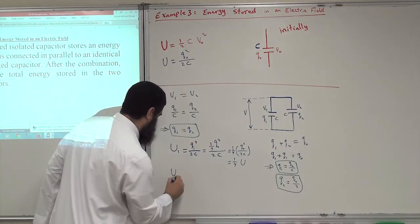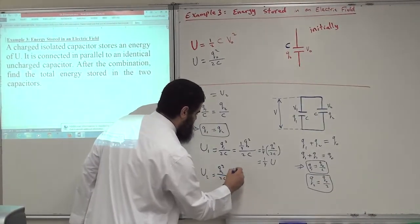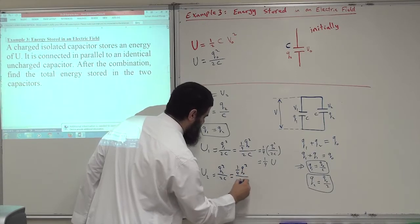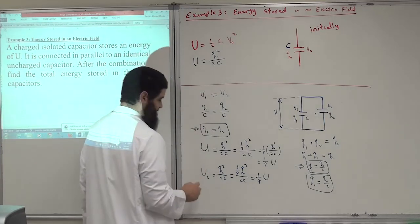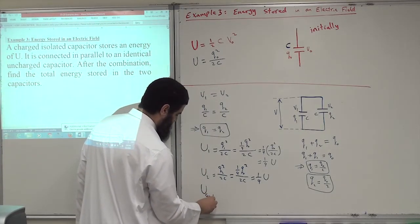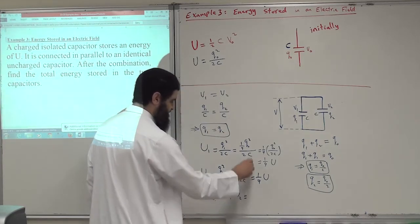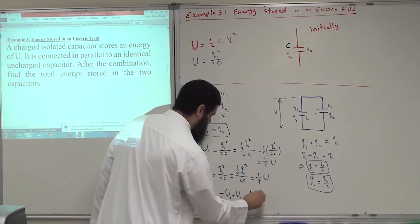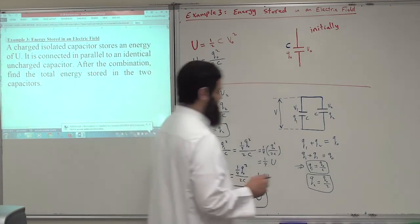Similarly, U2 equals Q2 squared over 2C, which also equals one quarter of the initial energy. So U-final equals U1 plus U2, which is one quarter plus one quarter, giving one half U. The final energy is one half the initial energy — it has reduced.